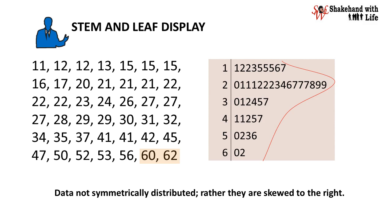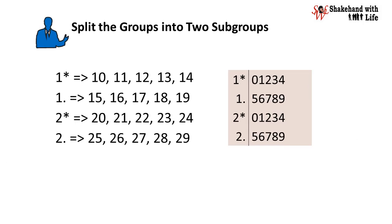We may feel that this display does not convey very much information because there are too many values with the digit 2. To solve this problem, we may split the groups into two subgroups.